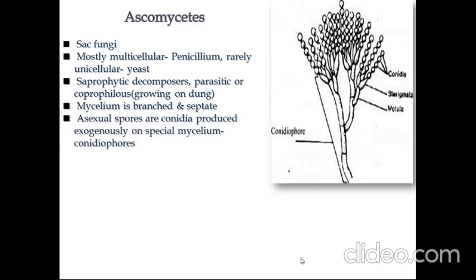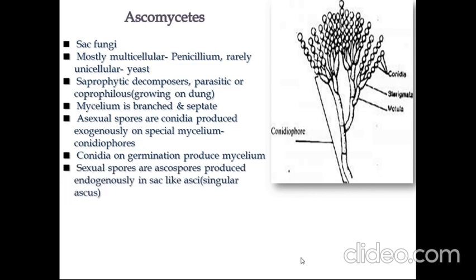Asexual spores of Ascomycetes are conidia, produced exogenously on special mycelium called conidiophores. Conidia on germination produce mycelium. Sexual spores are ascospores, produced endogenously in sac-like asci (singular: ascus). Asci are arranged in different fruiting bodies known as ascocarps.